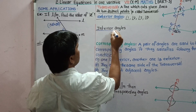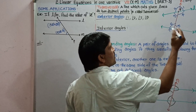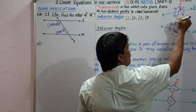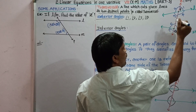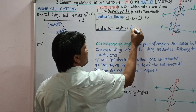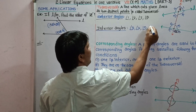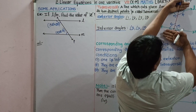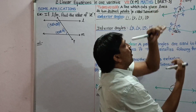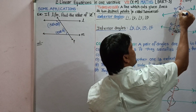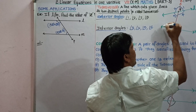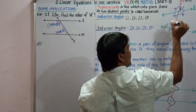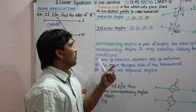The angles whose arms include line segment PQ are called interior angles. Angle 3 includes PQ as its arm. Similarly, angle 4, angle 5, and angle 6 also include this line segment PQ. So angles 3, 4, 5, and 6 are called interior angles. Some of these angles can be paired together by virtue of the positions they occupy, and we classify them into some groups.